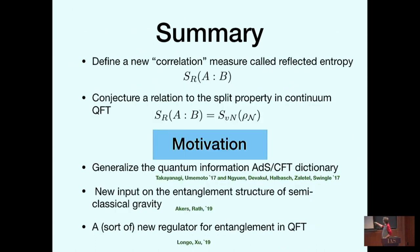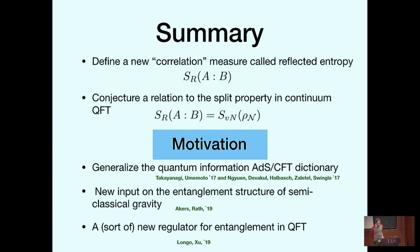In that geometry, I'll define a new correlation measure that we called reflected entropy. In this talk, I'll discuss how to prove the correspondence, and then at the end, I'll discuss some more speculative ideas where this quantity is related to the split property in continuum quantum field theory. The conclusion is that reflected entropy is calculating the von Neumann entropy of some nice type one factor in the quantum field theory.